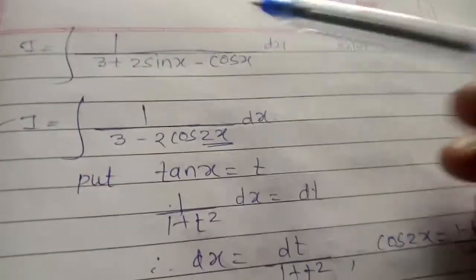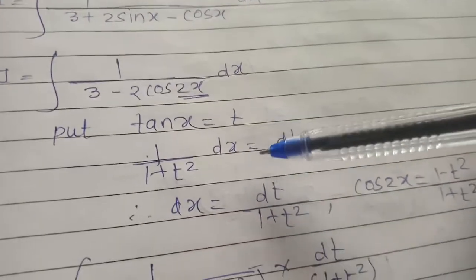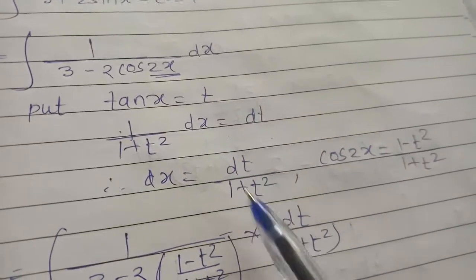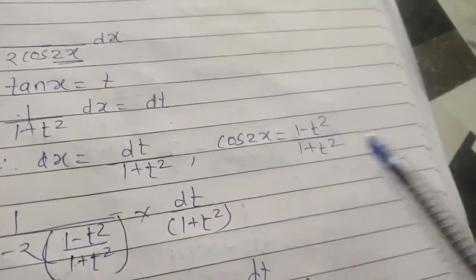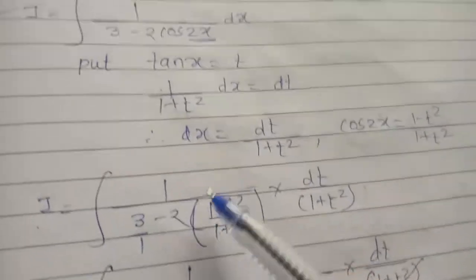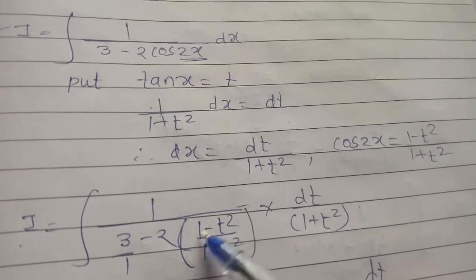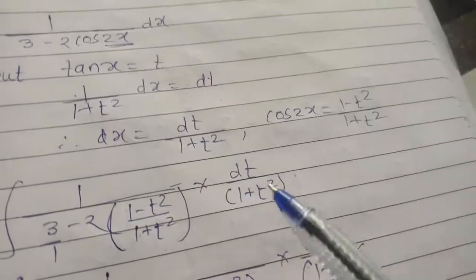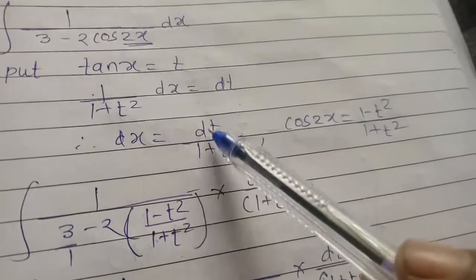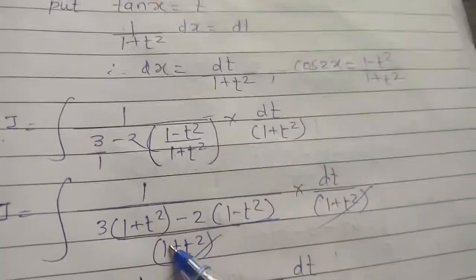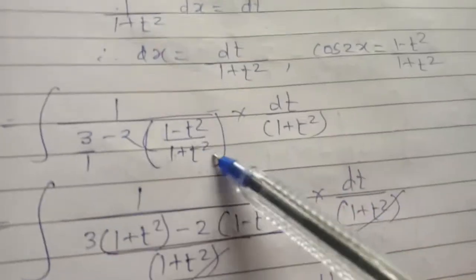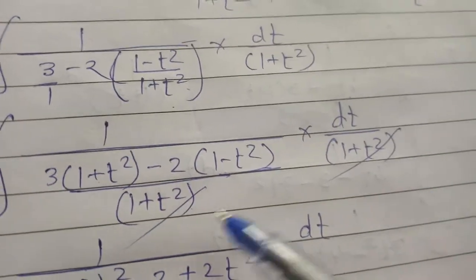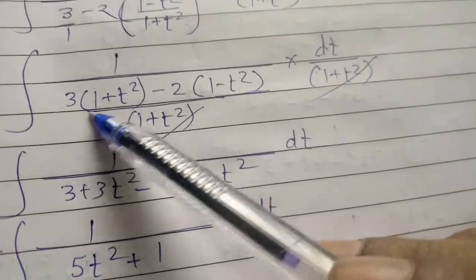Looking at the example again — 3 minus 2 cos 2x — we put tan x equals t. The derivative gives dx equals dt upon (1 plus t square). Substituting cos 2x equals 1 minus t square upon 1 plus t square, we get I equals integration of 1 upon [3 minus 2 times (1 minus t square upon 1 plus t square)] into dt upon (1 plus t square). Cross-multiplying, the denominator becomes 3(1 plus t square) minus 2(1 minus t square), and the (1 plus t square) terms cancel.